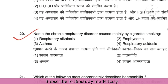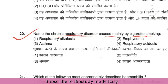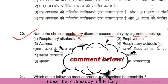Next question: name the chronic respiratory disorder mainly caused by cigarette smoking. Options include respiratory acidosis, alkalosis, asthma, and emphysema. Please comment your answer in the comment section — let me check if you know it. I will explain the answer.